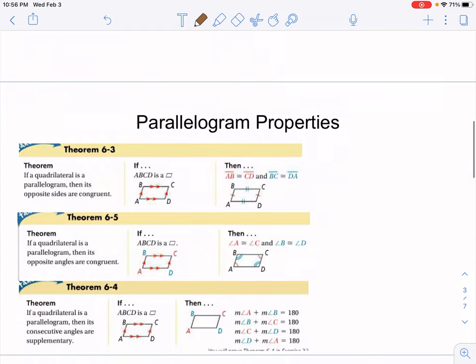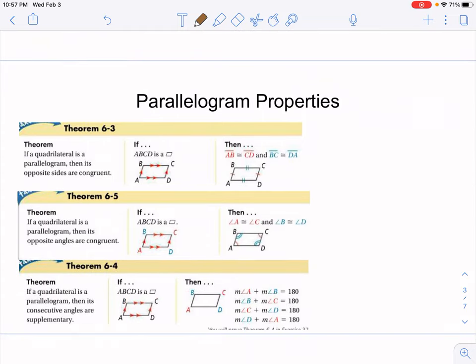Now, as I mentioned, parallelograms have many special properties. Most of them come from the fact that they are made of parallel lines. Those properties are that their opposite sides are congruent, that their opposite angles are congruent, and that their consecutive angles add up to 180 degrees.